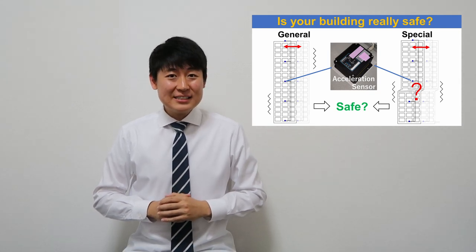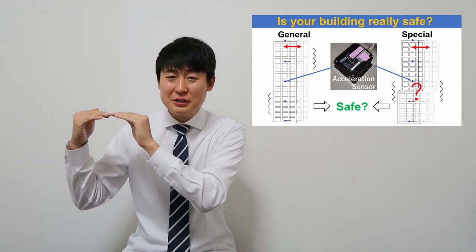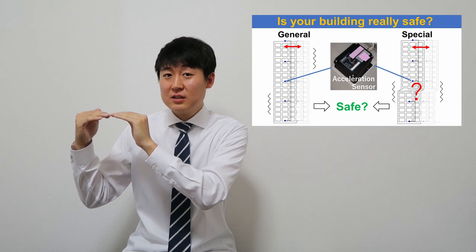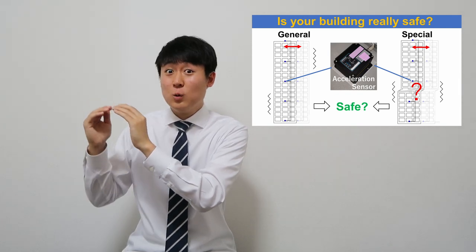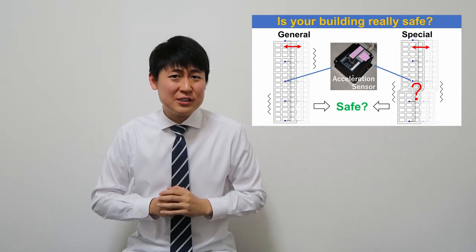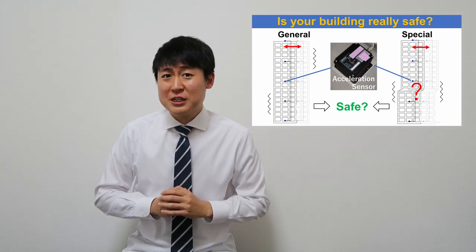In such cases, we may not be able to predict where the damage will be concentrated. So we cannot set our sensors directly on the affected floor. This means we may not be able to capture the damage concentration properly, which will affect safety evaluation.